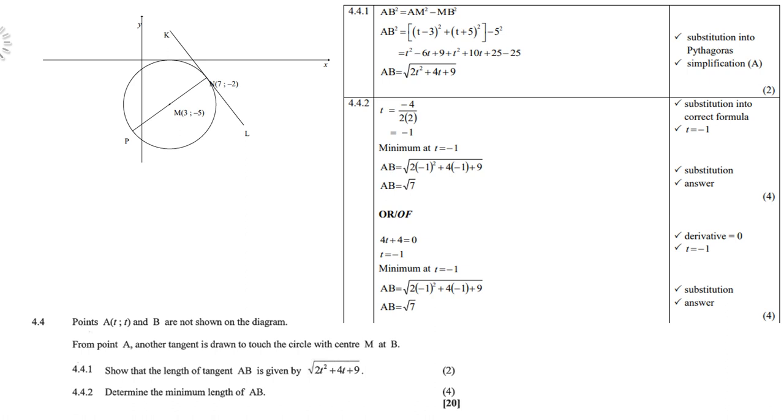4.4. Remember they told you that A and B are not on the circle, and A's coordinates T and T and B are not shown on the diagram. From point A, another tangent is drawn to touch the circle with center M at B. Show that the length of the tangent AB is the square root of 2T squared plus 4T plus 9. Remember now we use AB squared equals AM squared minus MB squared. We're using the theorem of Pythagoras. So do your substitution. Remember AM is (T minus 3) squared and MB is (T plus 5) squared minus 5 squared. Get rid of the brackets and you get your answer.